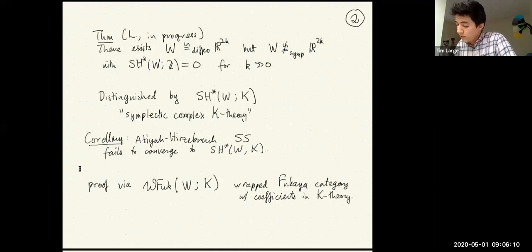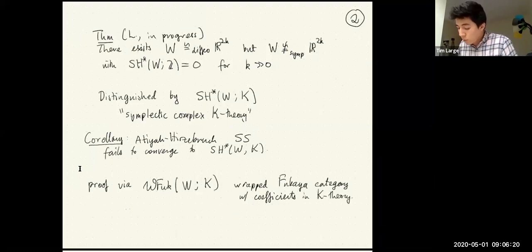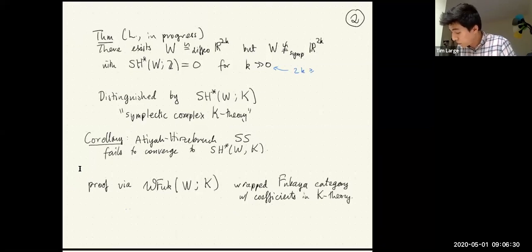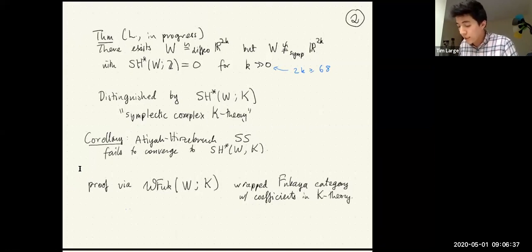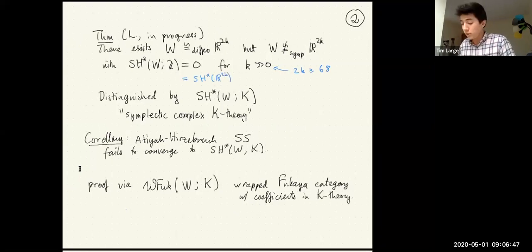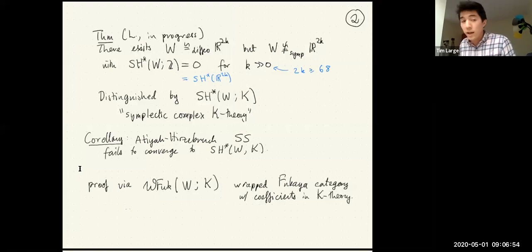I'd like to explain that there exists a Liouville manifold W which is diffeomorphic to Euclidean space but not symplectomorphic, and moreover has integral symplectic cohomology being zero. This is only in large enough dimensions — in particular, as long as 2k is at least 68, you're okay. The point is that symplectic cohomology being zero is satisfied by the standard symplectic structure on Euclidean space. So symplectic cohomology with integer coefficients does not distinguish between this structure and the standard one.